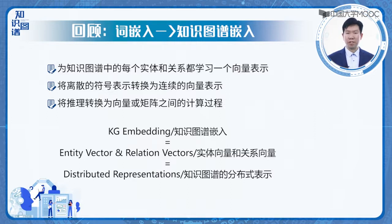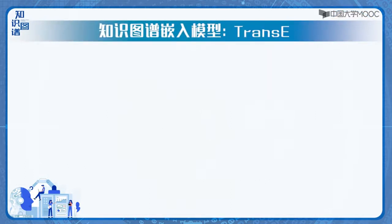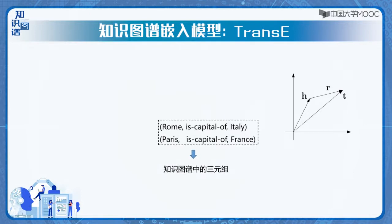在知识表示那一讲中，我们已经介绍过基于向量的知识图谱表示方法。我们希望为知识图谱中的每个实体和关系学习一个向量表示，称为实体或关系的Embedding。例如前面介绍过的TransE模型，通过加法模型定义给定三元组的得分函数：头节点H和关系R的向量表示相加的结果，应该在向量空间与尾节点T的向量比较接近。TransE以知识图谱中已经存在的三元组为输入，并通过随机替换三元组中的头尾节点产生负样本，整个学习过程是要使得真实存在的三元组得分尽可能高，不存在的负样本三元组得分尽可能低，通过多次迭代，最终为知识图谱中的每一个实体和关系都学习到一个向量表示。